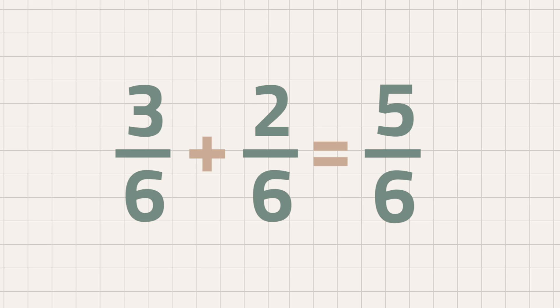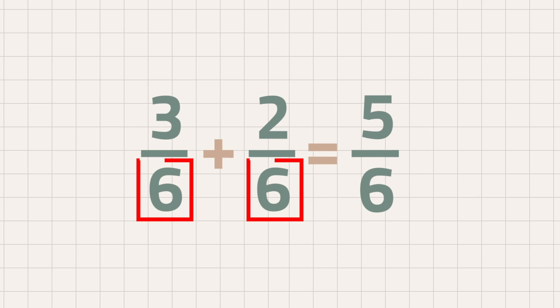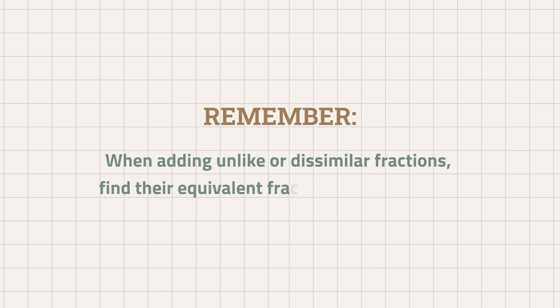Simply put, since the fractions have the same denominator, we can just add the numerators and copy the denominator. So remember, when adding fractions with unlike or dissimilar denominators, we have to find equivalent fractions which share a least common denominator.